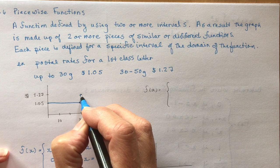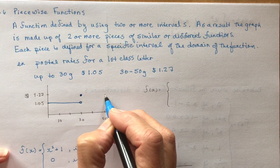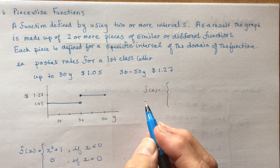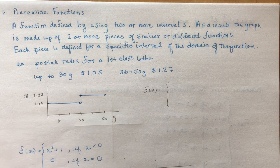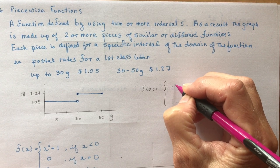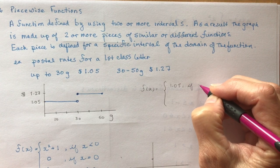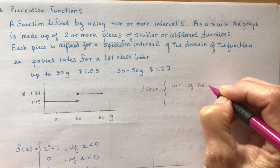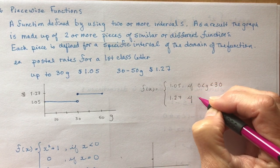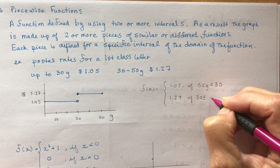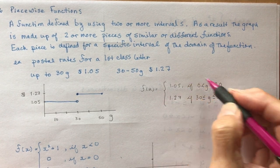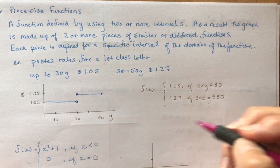I'm going to use a closed circle here because as soon as it hits 30 grams they're going to charge you more, and it goes up to 50 grams. At 50 grams, a letter is no longer considered a letter if it weighs more than that. So our piecewise function is $1.05 if the weight is between 0 and 30 grams, and $1.27 if between 30 and 50 grams, inclusive. This is how you describe the graph and what it looks like on a coordinate plane.